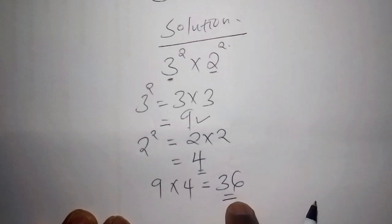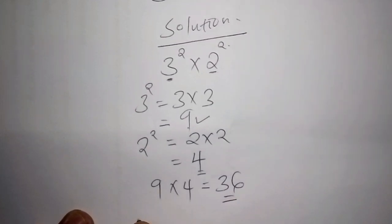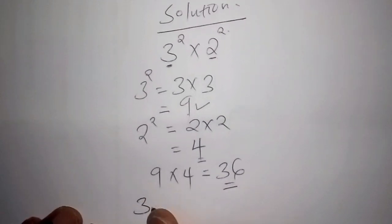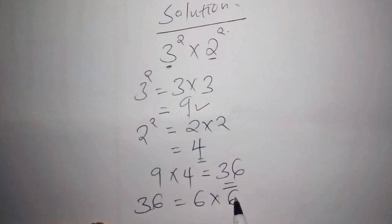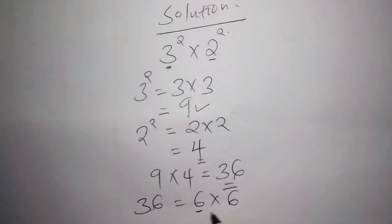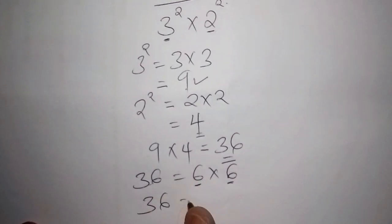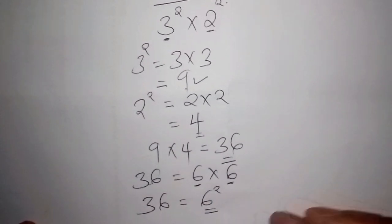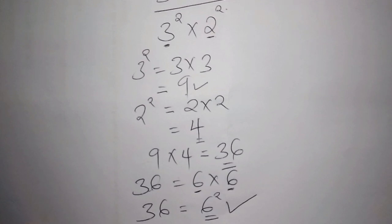Once we get 36, we need to convert it to a power. We know that 36 equals six multiplied by six, so we have two sixes, meaning 36 equals six to the power of two. If you got six to the power of two, you've done the correct thing — thumbs up! Let's move to the second one.